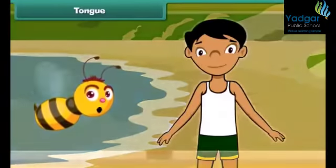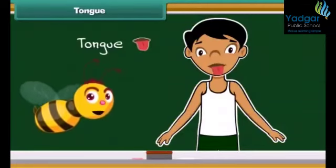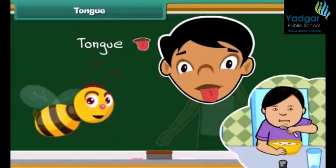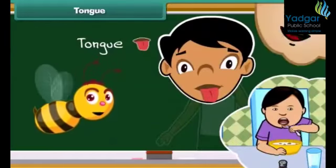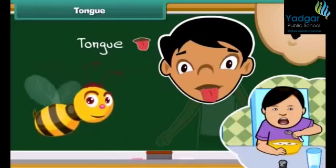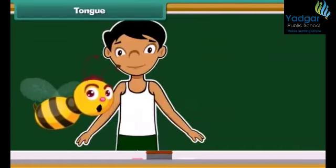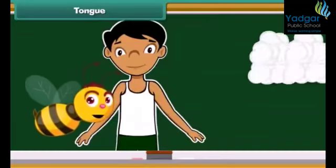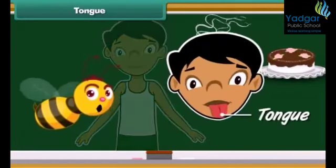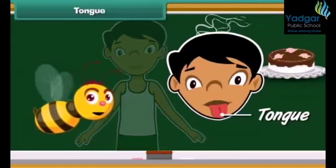The fourth sense organ of our body is our tongue, present inside our mouth. The tongue is the organ for taste and also helps us to speak properly. The tongue helps us to taste and identify the difference between foods like a yummy cake or a delicious dal.